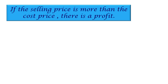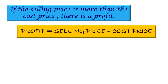You have to remember: selling price is more than the cost price. So, how are we going to find the profit? The formula for profit is: Profit = Selling Price − Cost Price. You have to remember this formula because when you are going to find the profit, you have to apply it.